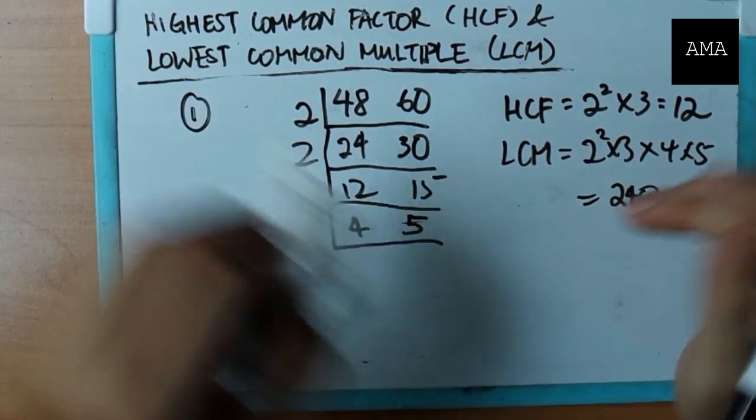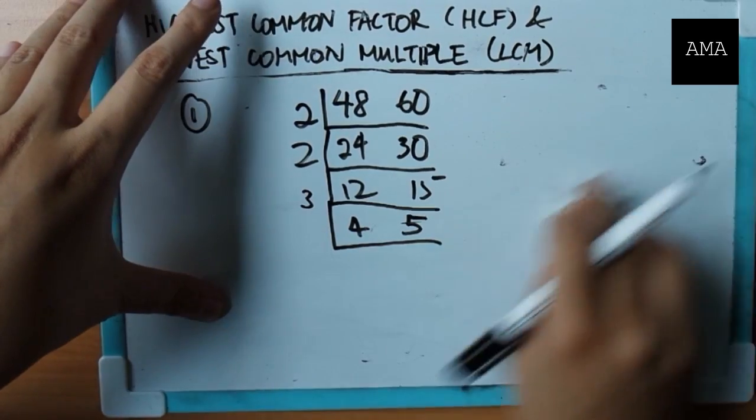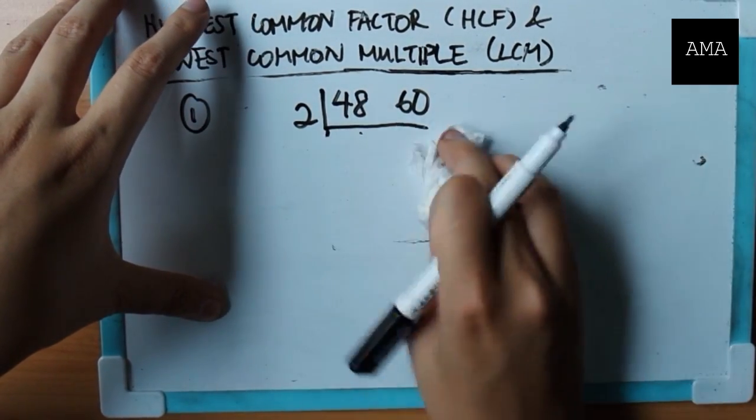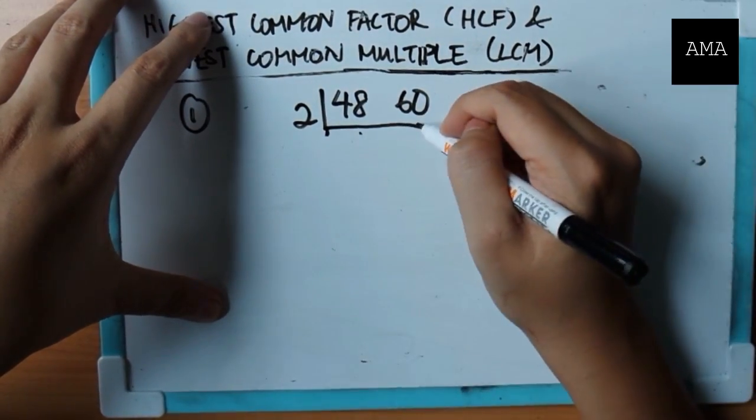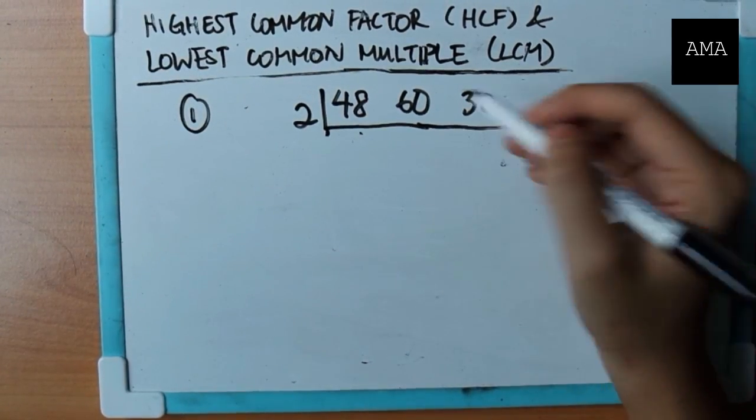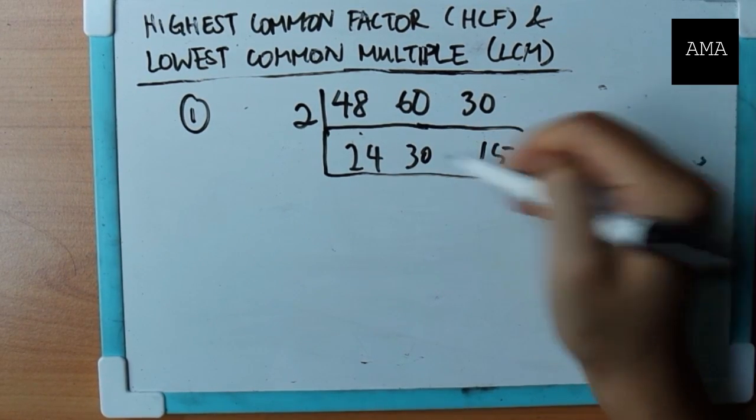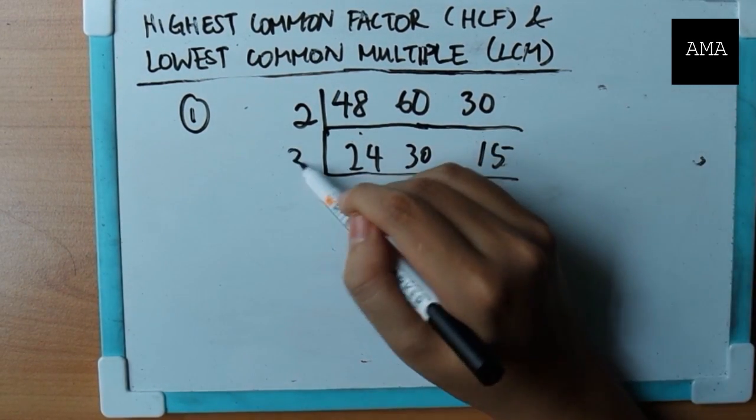Okay? What if there's a third number? So a third number is where things get a little bit tricky for LCM. For HCF, it's still the same. So you don't have to worry about that. So let's say I add on thirty. Now I can still divide by two. That's no problem. Twenty-four, thirty, and fifteen. I can't divide by two anymore, but I can divide by three.